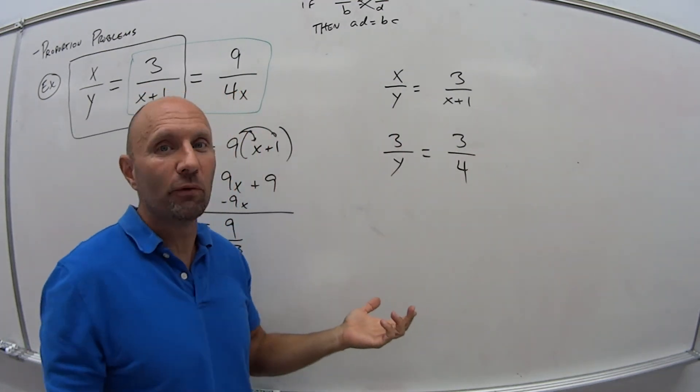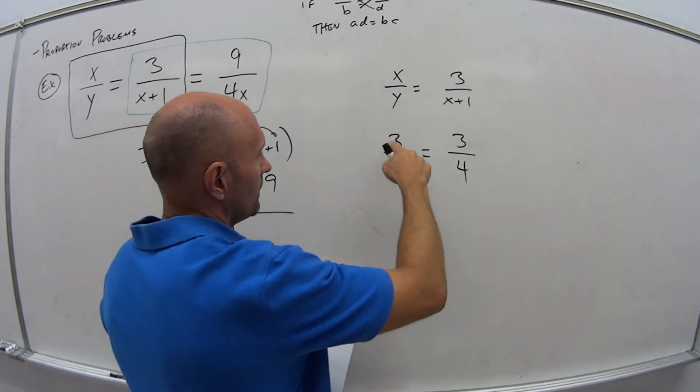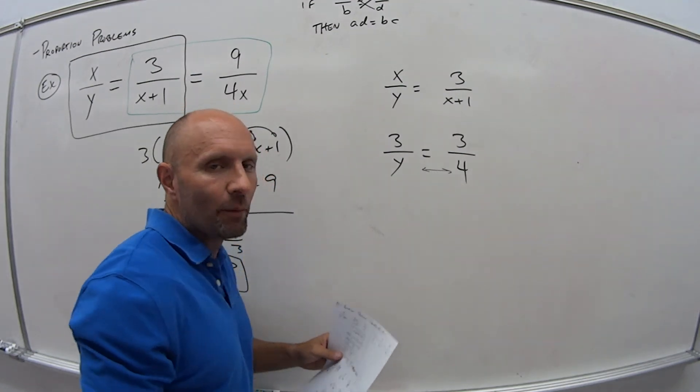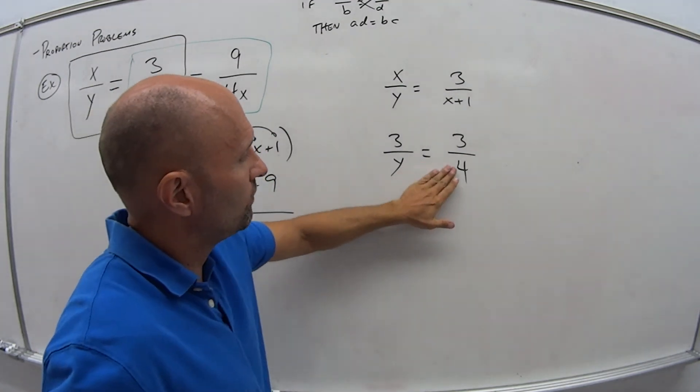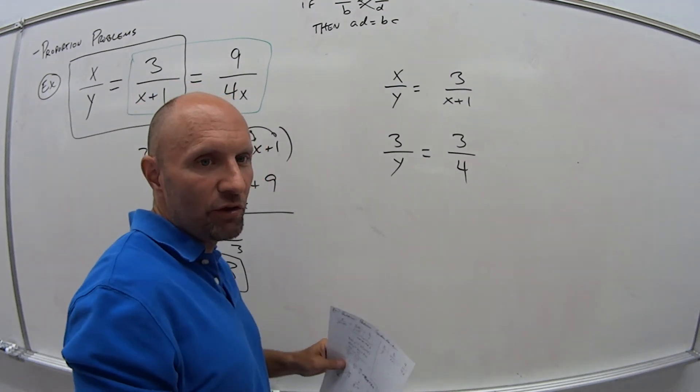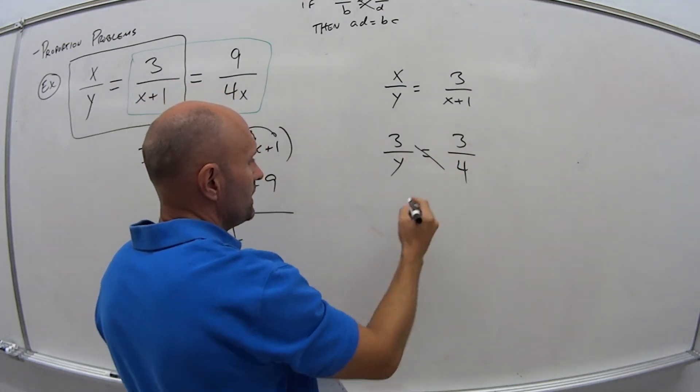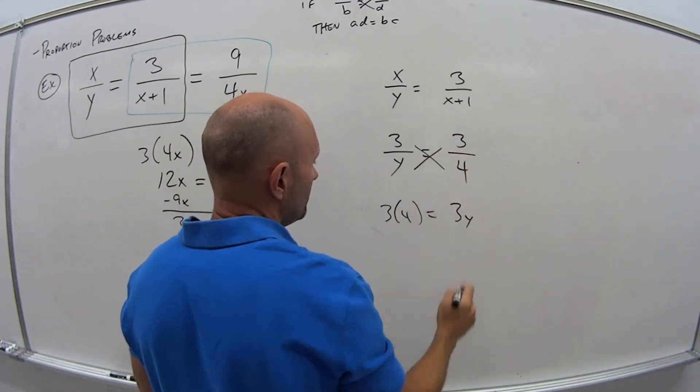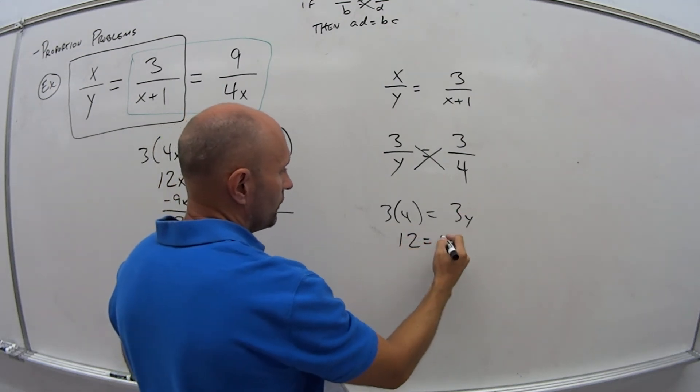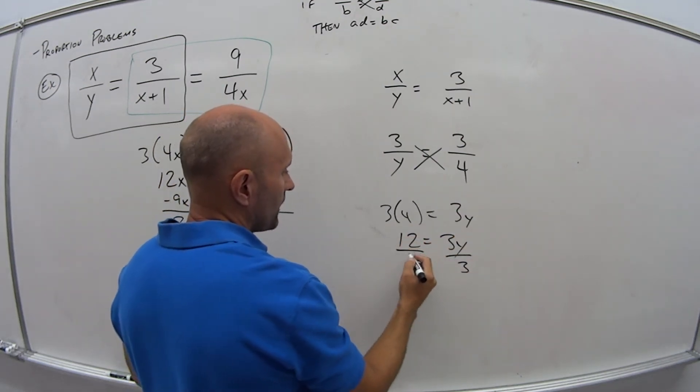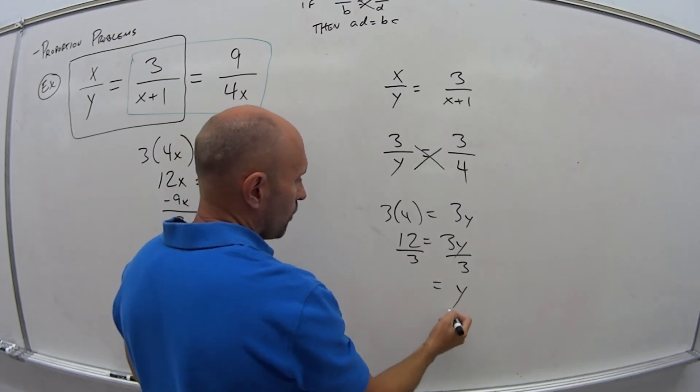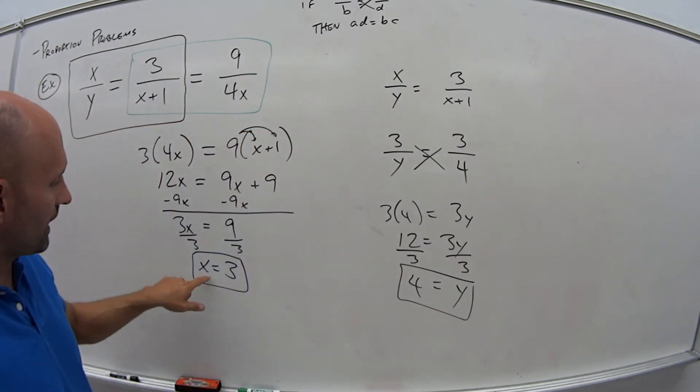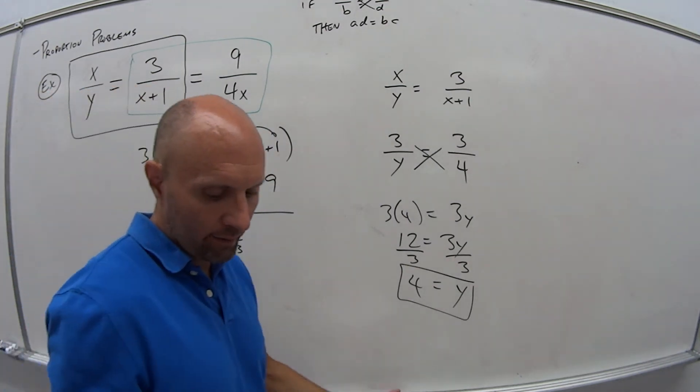So right now this is super easy, right? Because if 3 over y equals 3 over 4, well y would have to be 4. But let's assume this one didn't fall into place like that. What do we do? Cross multiply. So 3 times 4 equals 3 times y. So 12 is equal to 3y. Divide both sides by 3 means that y is equal to 12 divided by 3 is 4. So my answer then is that x is equal to 3, y is equal to 4.